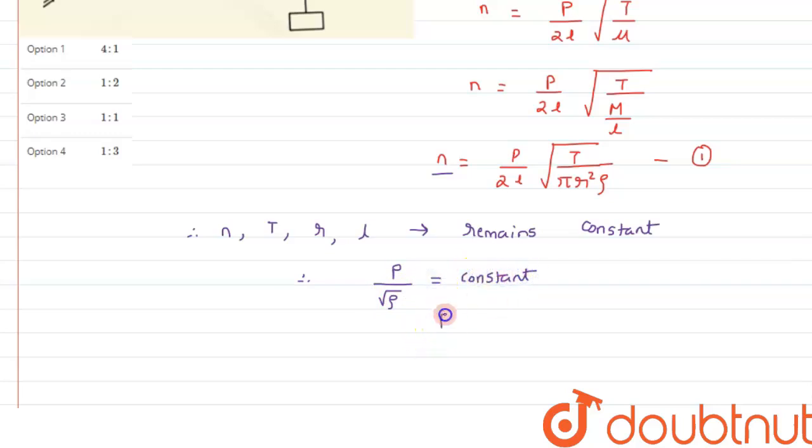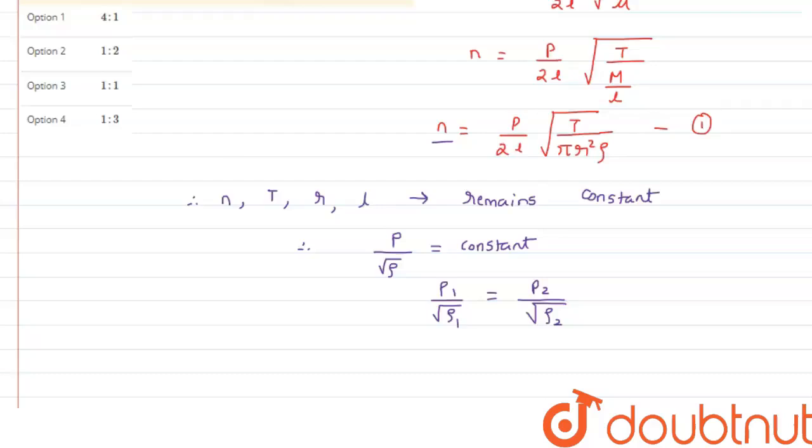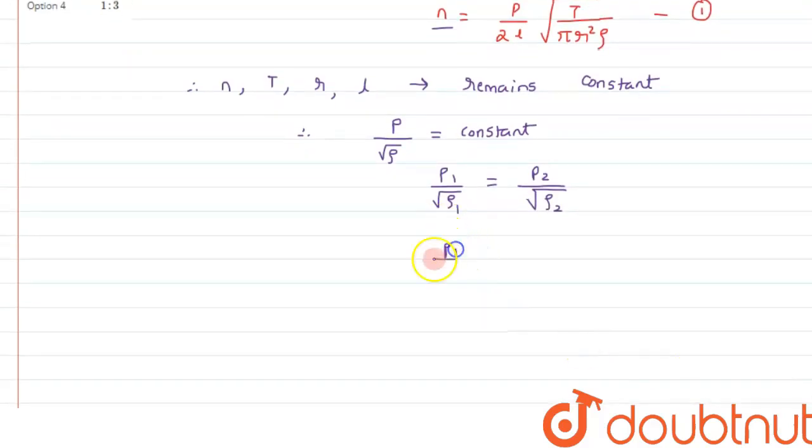So from here we can say P1 upon root rho 1 upon P2 equals P2 upon root rho 2. So from here we can say the ratio of P1 by P2, that is number of loops in wire one upon number of loops in wire two, will equal root rho 1 upon root rho 2.